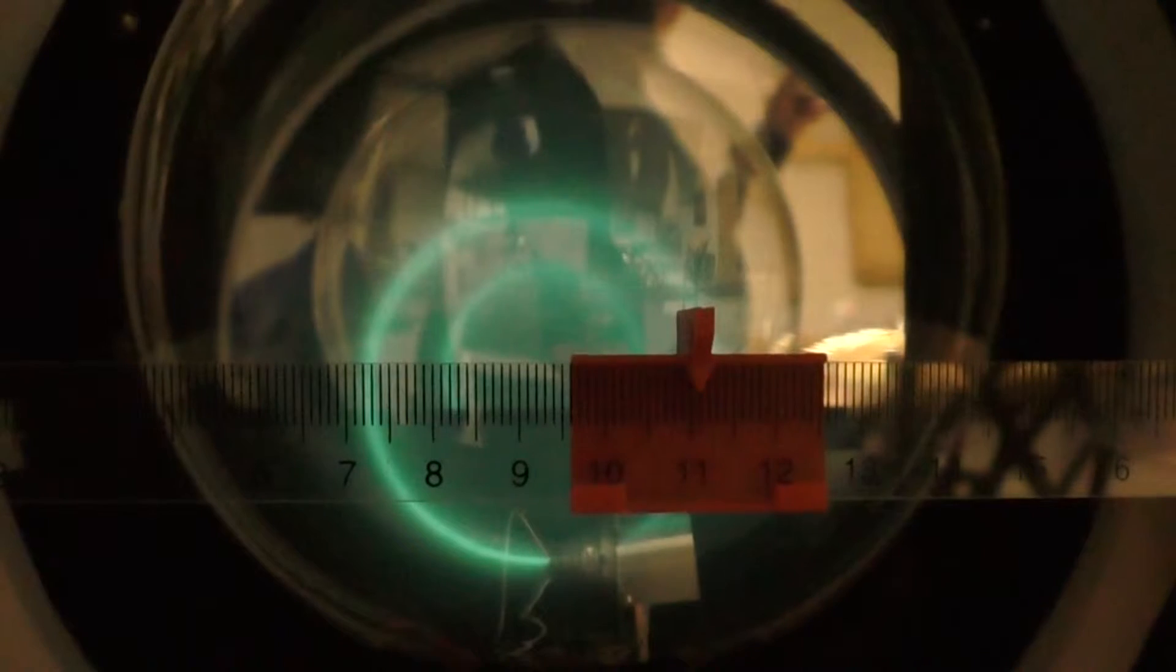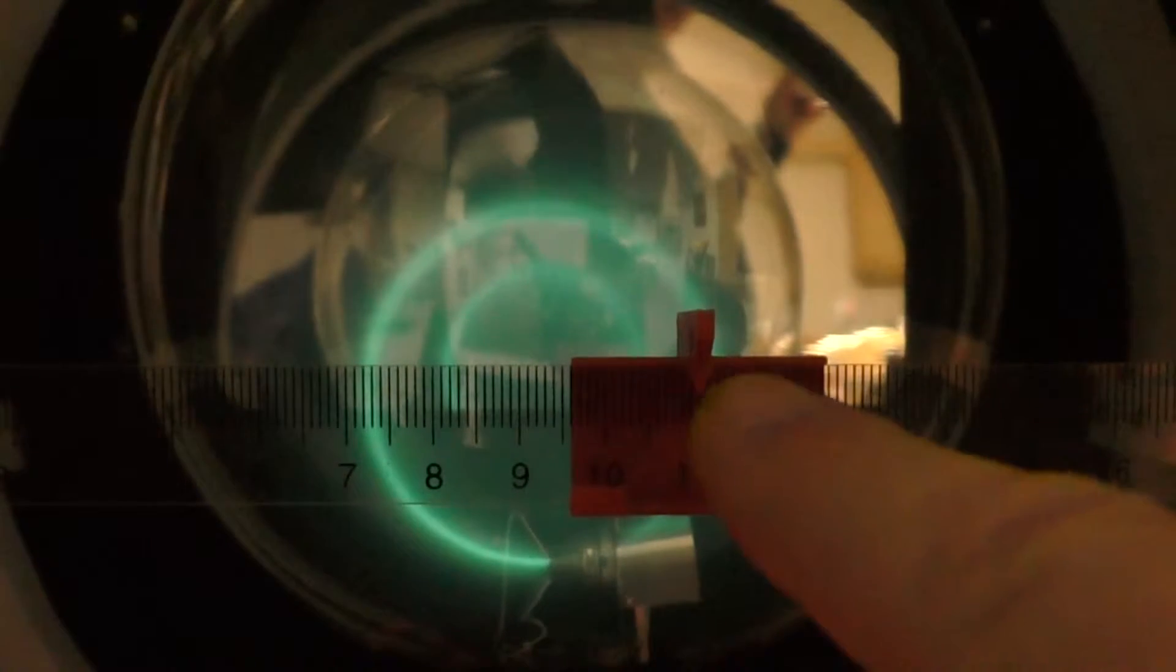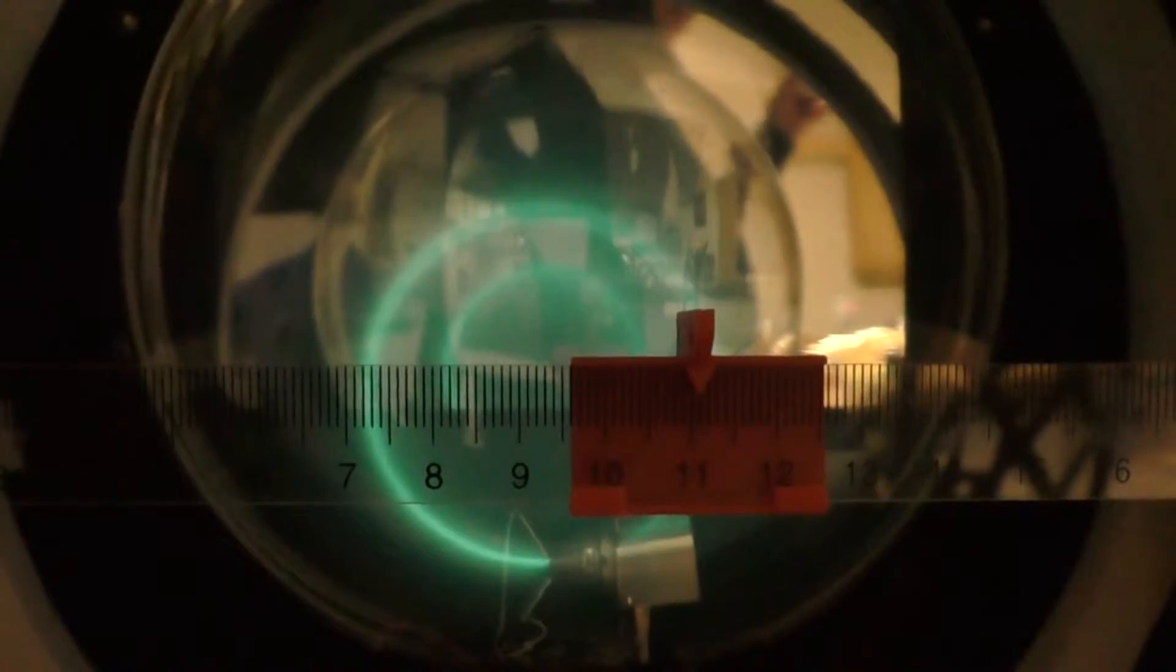When you are making these measurements, make sure that the sight on the ruler and its reflection in the mirror line up. If you wish to look at the magnetic field going in the opposite direction,